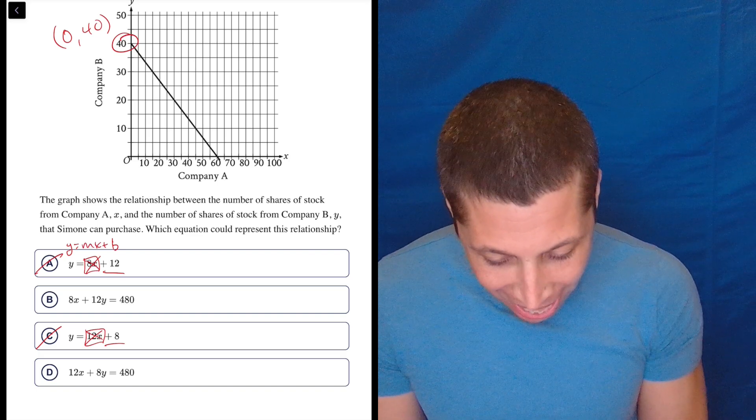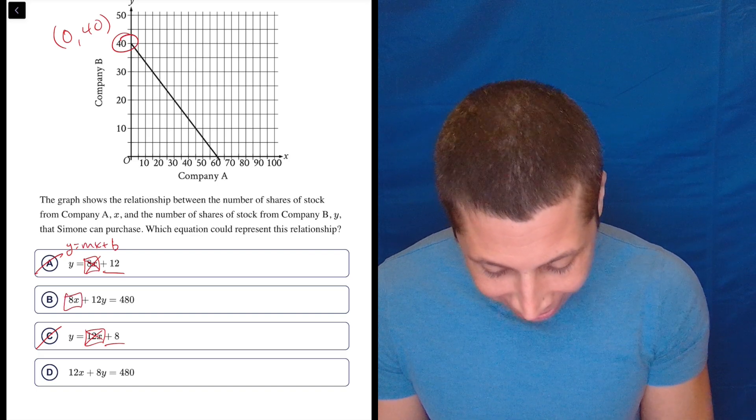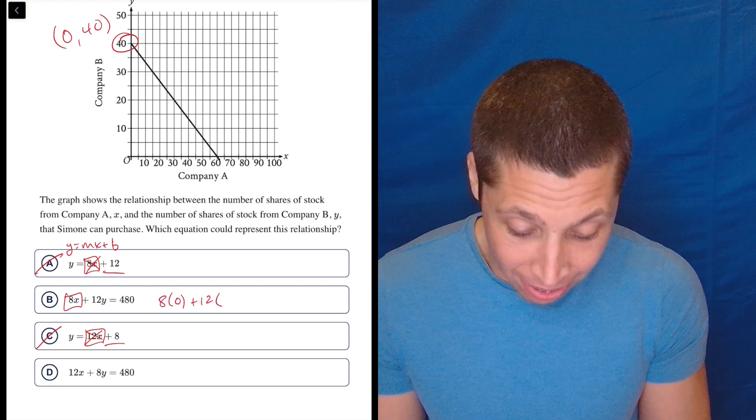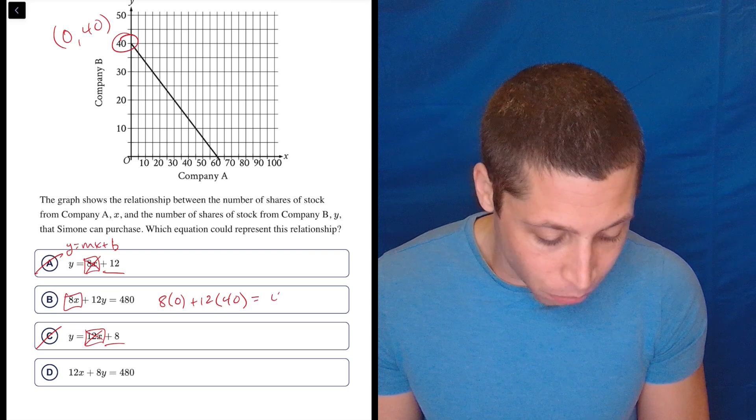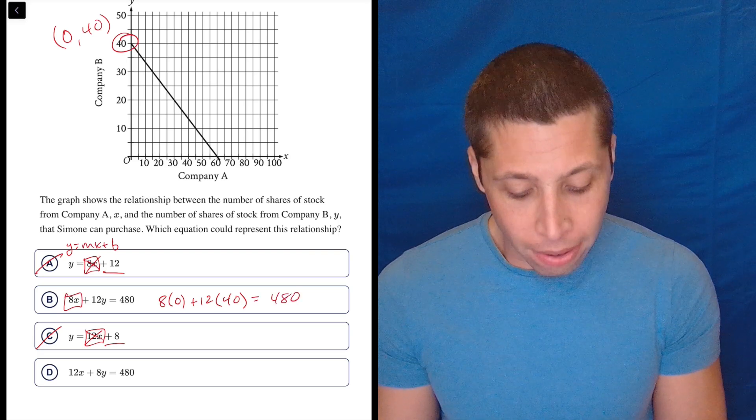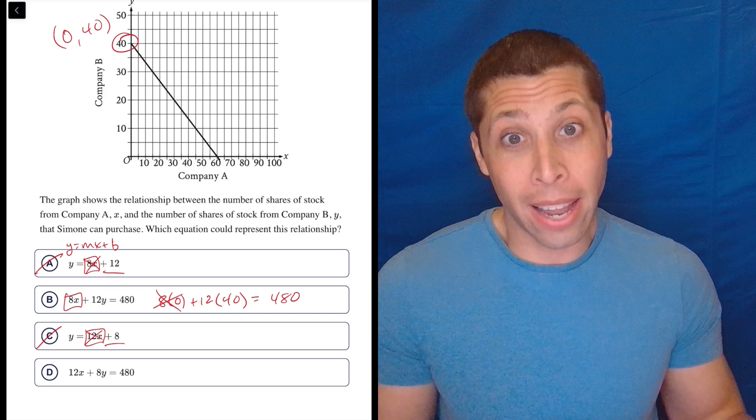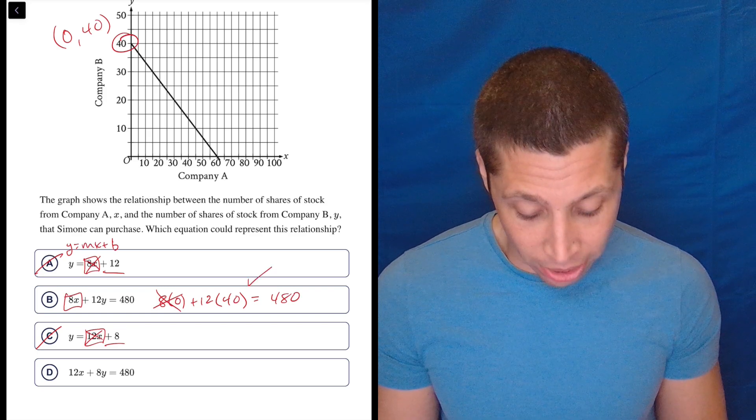Plug it in. So 8 times 0, we said it's going to cancel it out. So I'll write it out just for the sake of it, but I'd be doing this in my head. So 12 times 40 is 480. Is that true? Yeah. 8 times 0 goes away. 12 times 4 is 48, and add a 0 to it, that's 480. So that checks out.